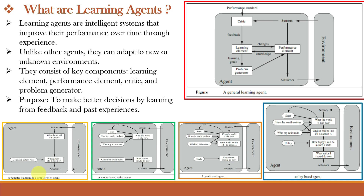For a simple reflex agent, the performance includes condition-action rules. For a model based reflex agent, it also has internal state or memory along with condition-action rules. For a goal based agent, the performance additionally has goals. For a utility based agent, it additionally has utility. While for a learning agent, it additionally has a learning element along with a critic and problem generator.